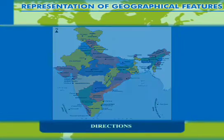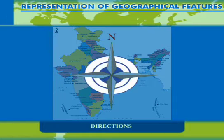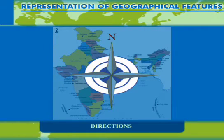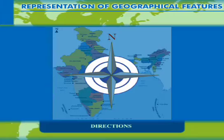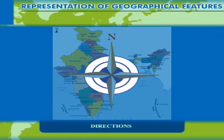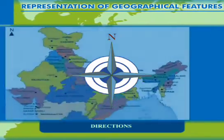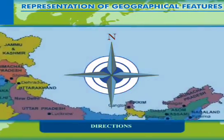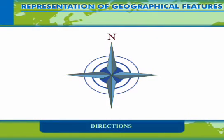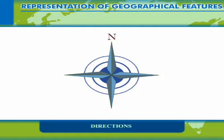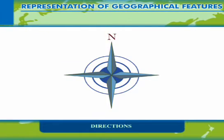Like distance, the other important aspect to note on a map is the direction of places. The north is always pointed towards the top of the page. It is shown on a map with the north line and arrow marked with the letter N at the upper right-hand corner of the map.